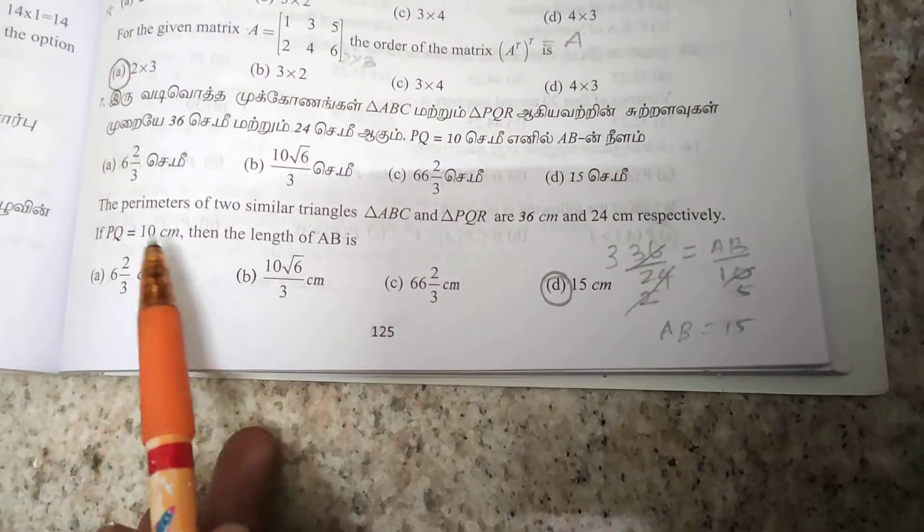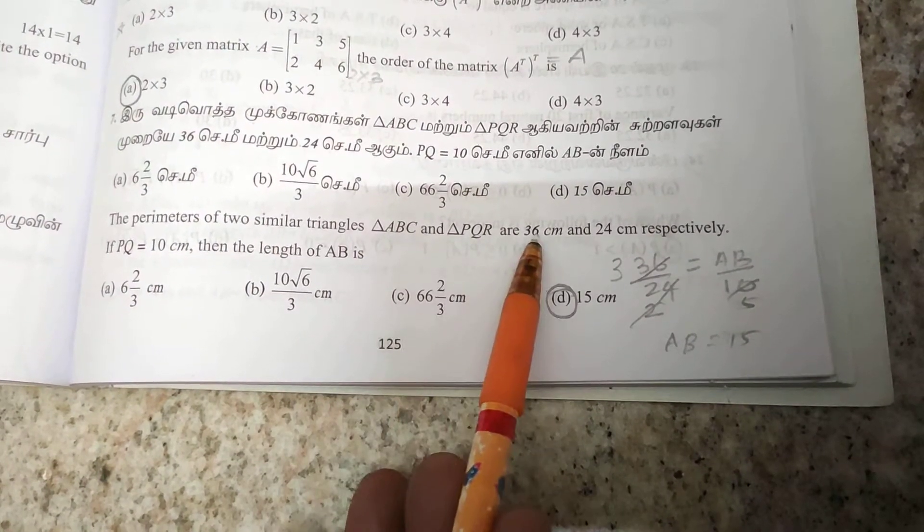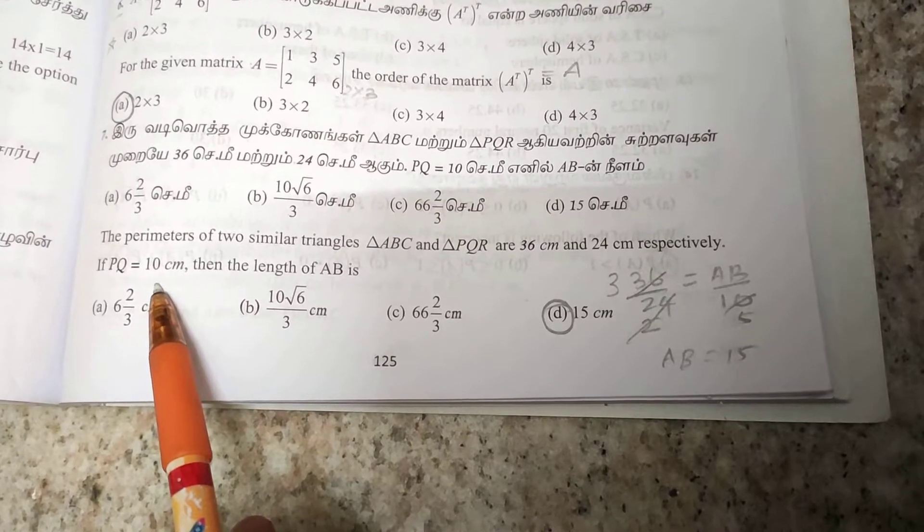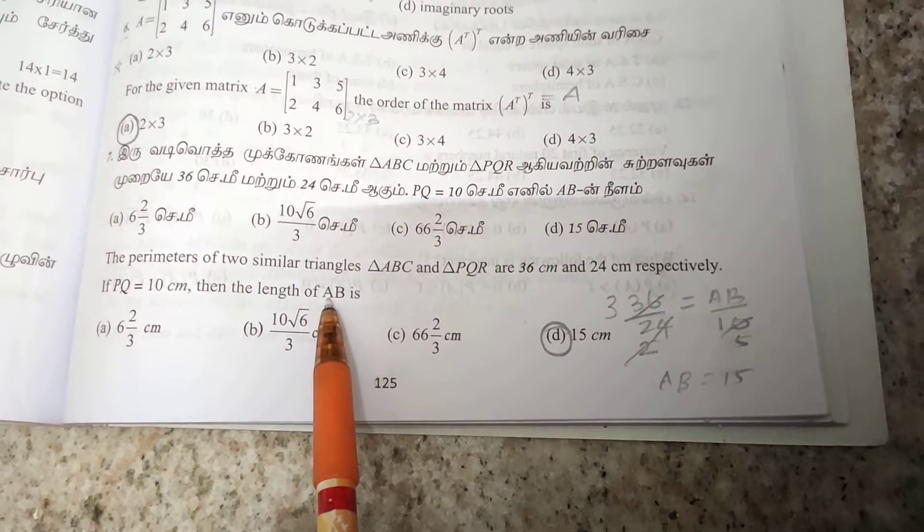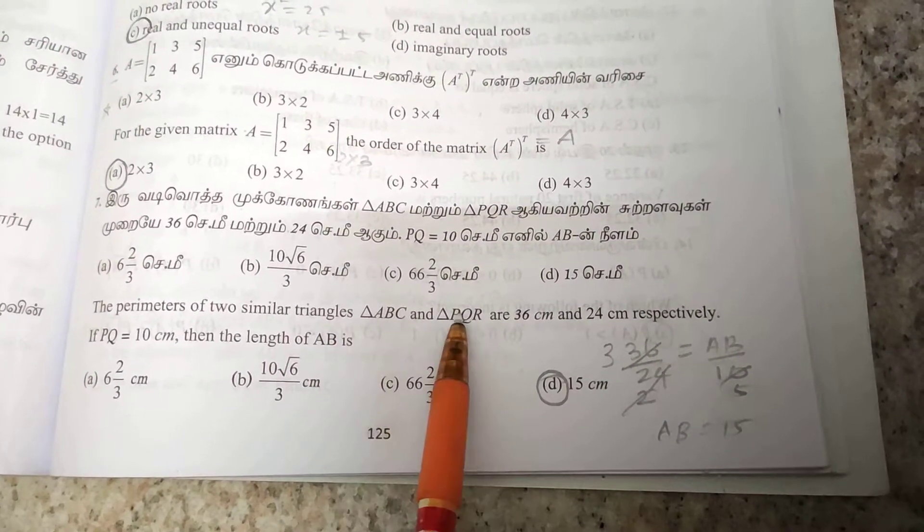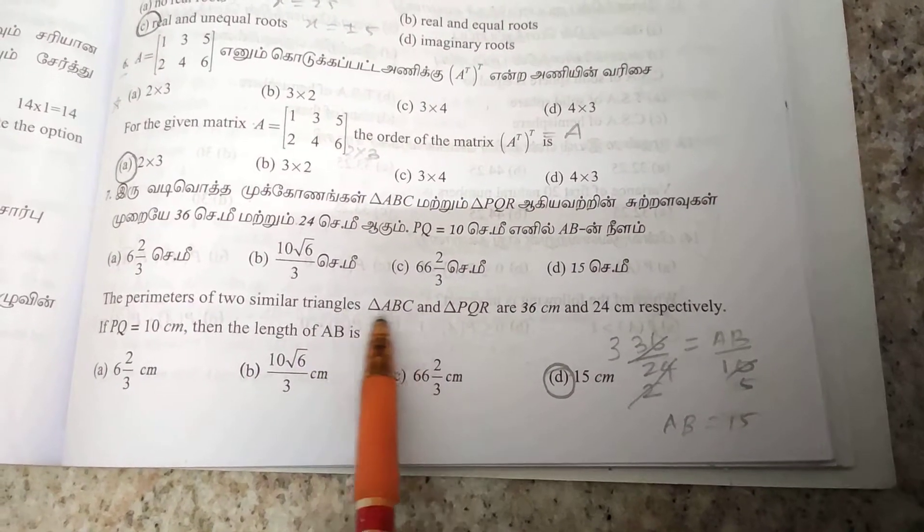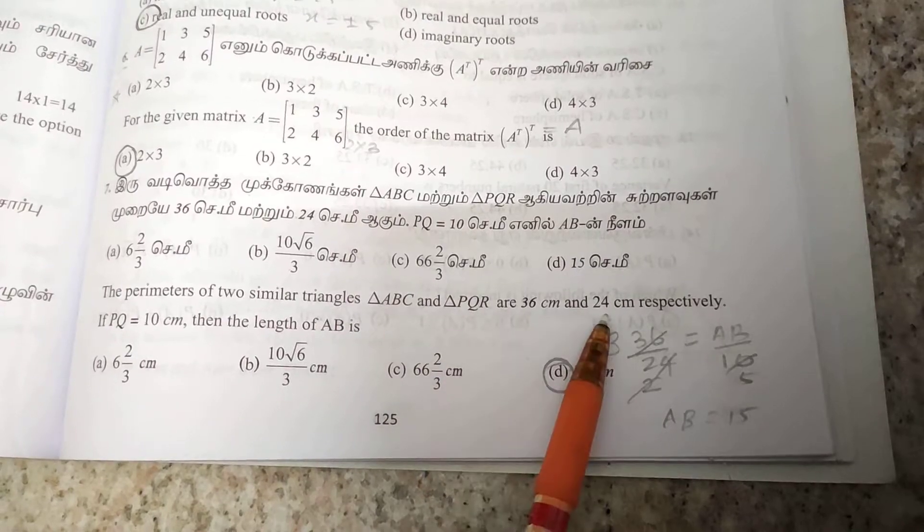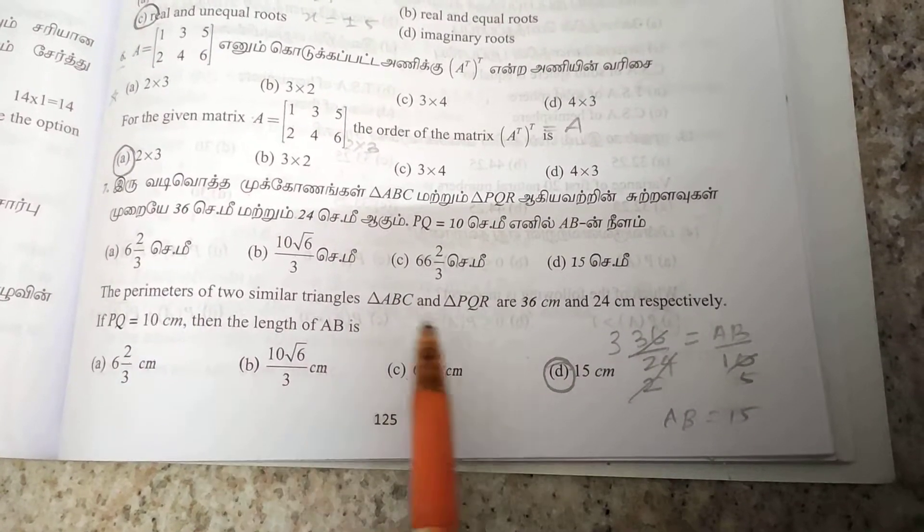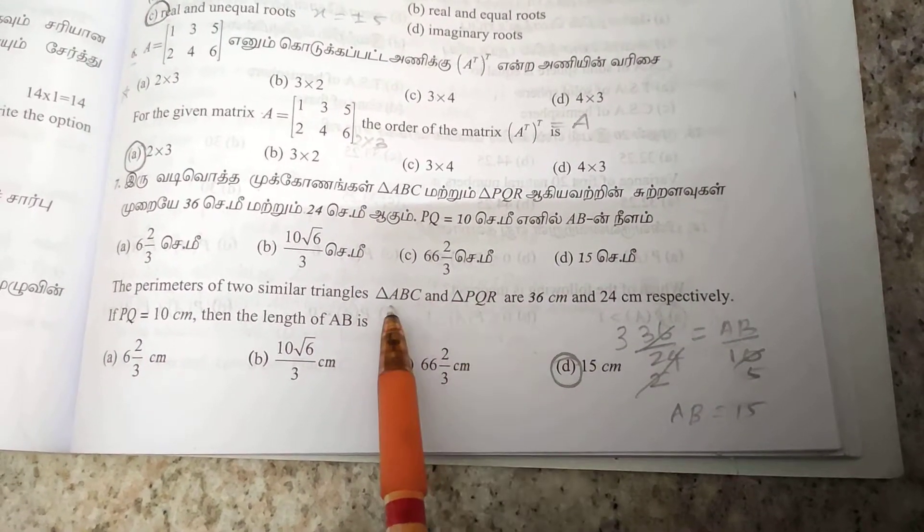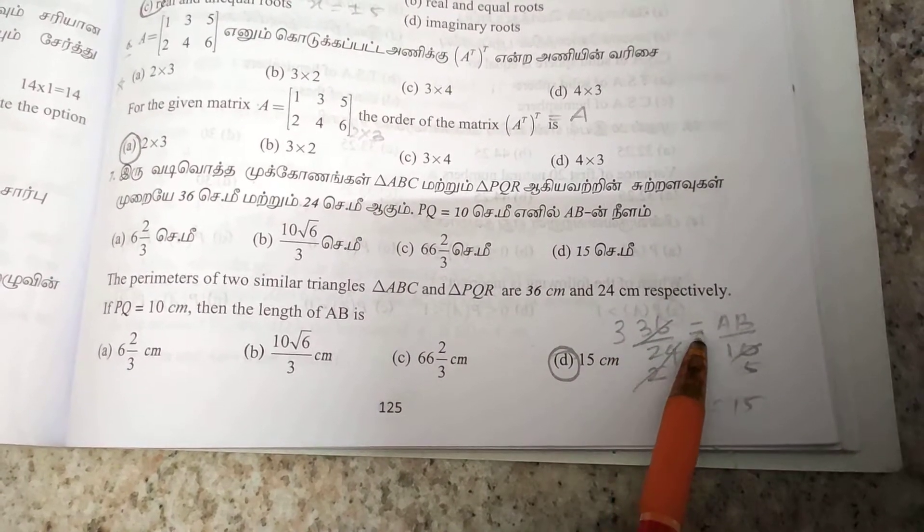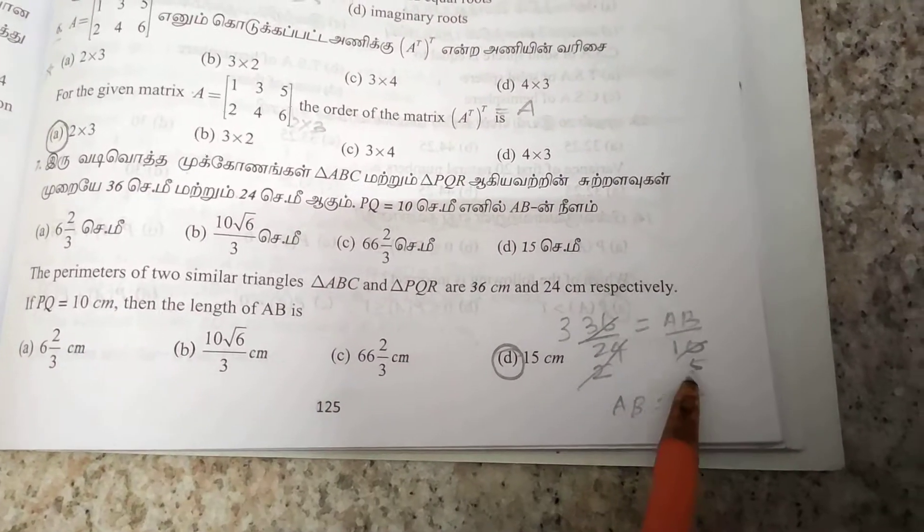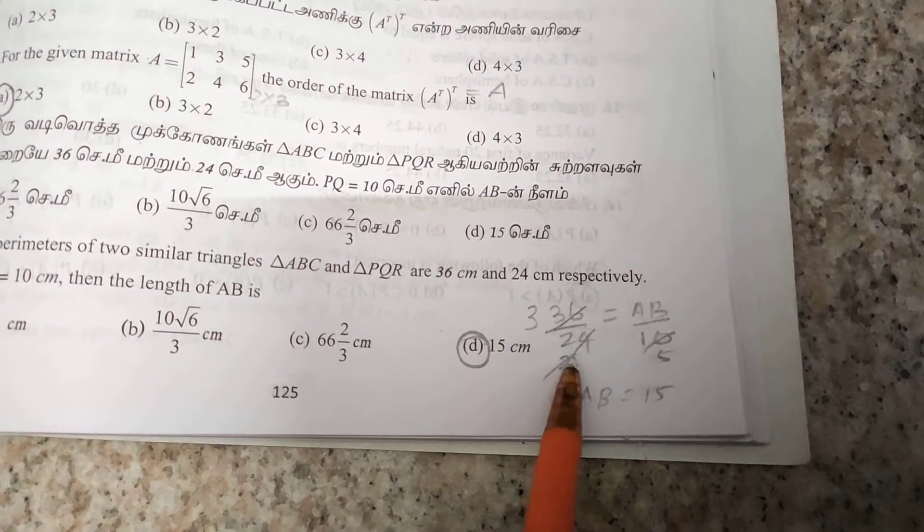Seventh one: the perimeter of two similar triangles. For similar triangles, the ratio of perimeters equals the ratio of corresponding sides. The perimeters are 36 cm and 24 cm respectively. So 36/24 equals AB/PQ, where PQ is what we need to find.